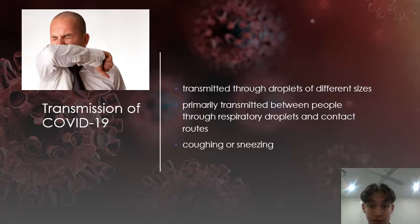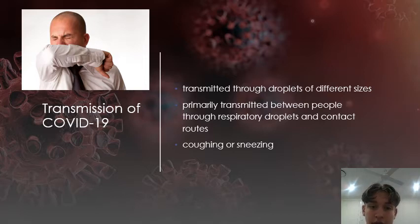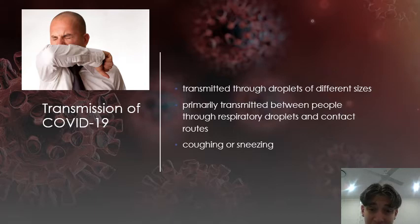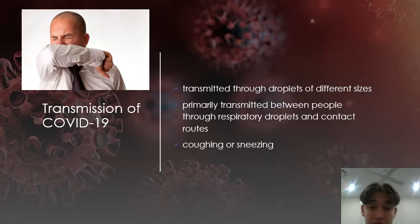COVID-19 can be transmitted through droplets of spit when the droplet particle is 5 to 10 microns in diameter. They are referred to as respiratory droplets. According to current evidence, COVID-19 is primarily transmitted through respiratory droplets and contact routes. Droplet transmission occurs when a person is in close contact within one meter with someone who has respiratory symptoms such as coughing or sneezing, and is therefore at risk of having their mouth, nose, or eyes exposed to potentially infected respiratory droplets.